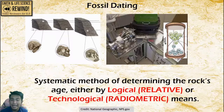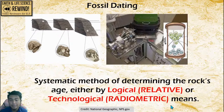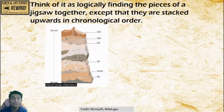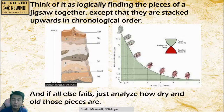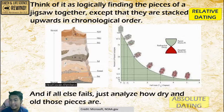What is dating exactly in the field of science? Fossil dating is the systematic method of determining the rock's age either by logical relative dating or technological radiometric means. Think of dating as logically finding the pieces of the jigsaw puzzle together, except that they are stacked in a logical and chronological order. If all else fails, you have technology — just analyze how dry and old those pieces are and measure the amount of their radioactive substances. These two very different methods are called relative dating and absolute dating, or radiometric dating.